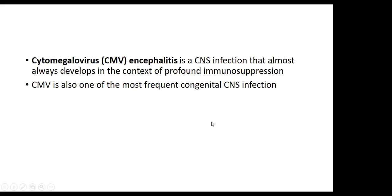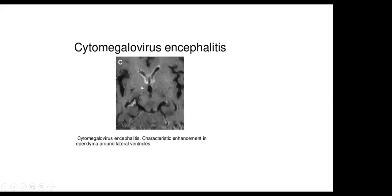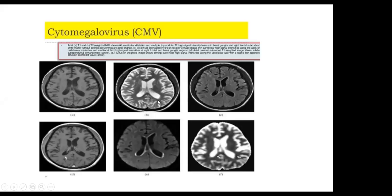Cytomegalovirus encephalitis is a CNS infection that almost always develops in the context of profound immunosuppression. CMV infection is also one of the most frequent congenital CNS infections. Periventricular ependymal enhancement is characteristic. A case: T1 shows mild dilatation of the ventricles. T2 and FLAIR show ventricular dilatation, nodular hyperintense signal in the basal ganglia and cortical white matter in the frontal regions. T1 contrast shows subtle enhancement in the periventricular regions. DWI shows curvilinear hyperintense signal in the walls of the lateral ventricles, and ADC map shows restricted diffusion.